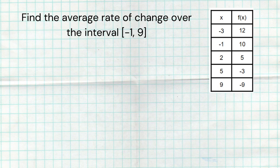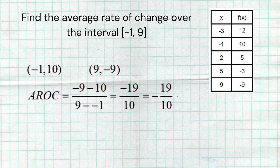We can also find the average rate of change from a table of values when we don't have the actual function. To find the average rate of change over the interval [-1, 9], use the table: at x = -1, the output is 10; at x = 9, the output is -9. So the rate of change is (-9 - 10) / (9 - (-1)) = -19/10.